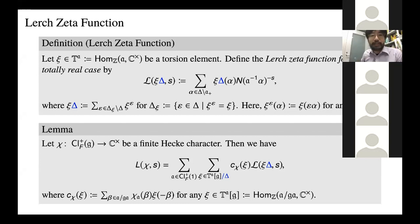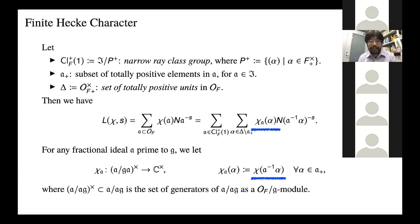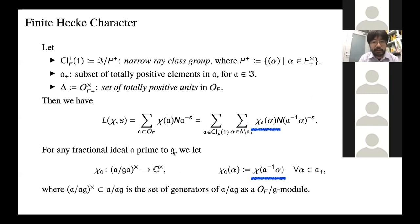A clarifying question about notation: when you work with prime to G, this should be effective since you work with ideals congruent to one mod G. So the gothic G when you write 'prime to gothic G' — yes, it's an integral ideal. Thank you.